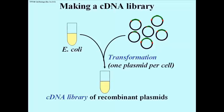So we mix the two together under conditions which allow transformation. You remember transformation as the very early experiment of Griffith using streptococcus. He discovered that streptococcus under the right conditions will take up DNA and incorporate the DNA into the cell. Well, you can do the same thing here, only this time the plasmid is being taken up.